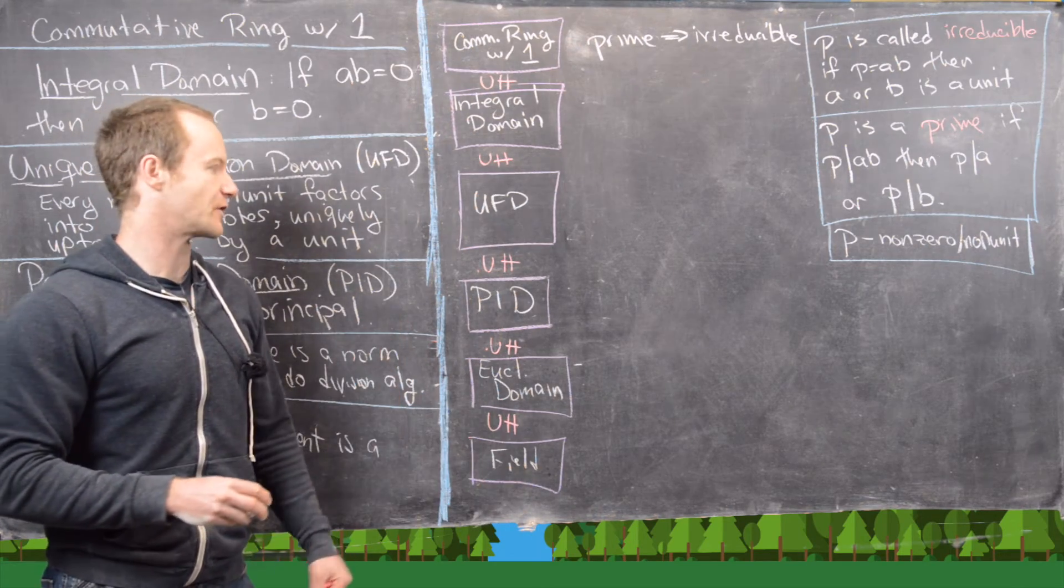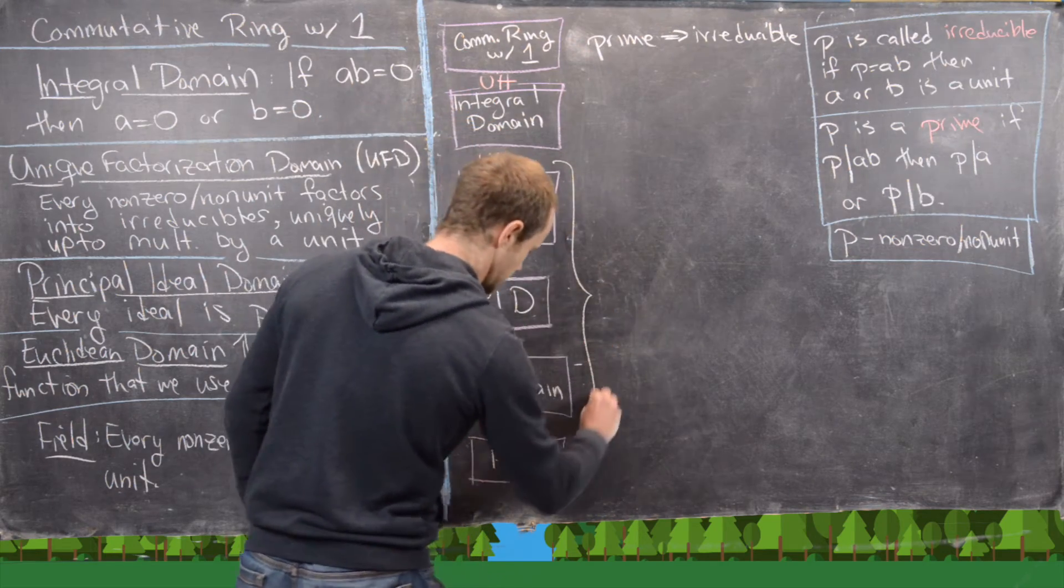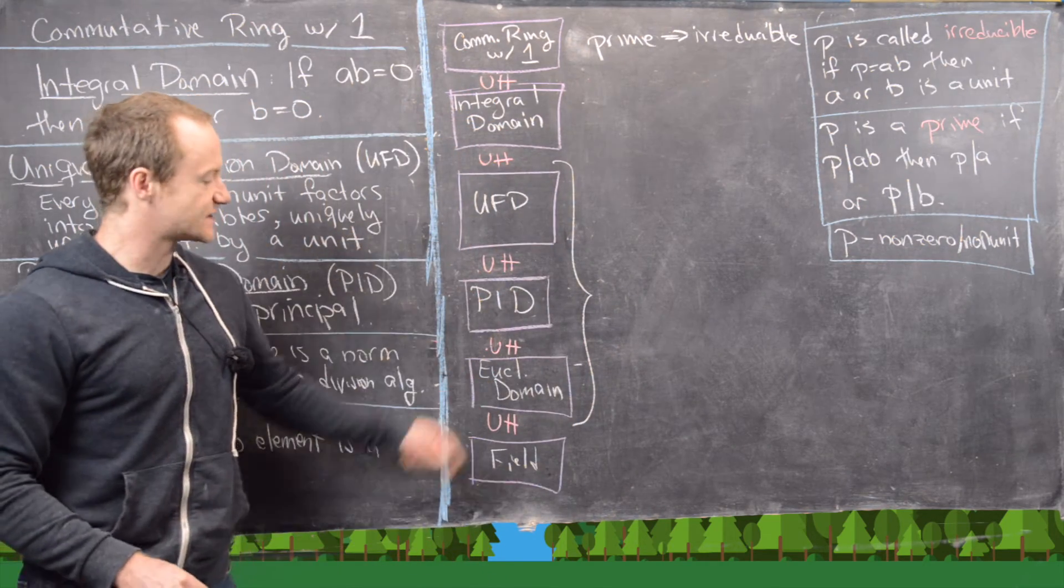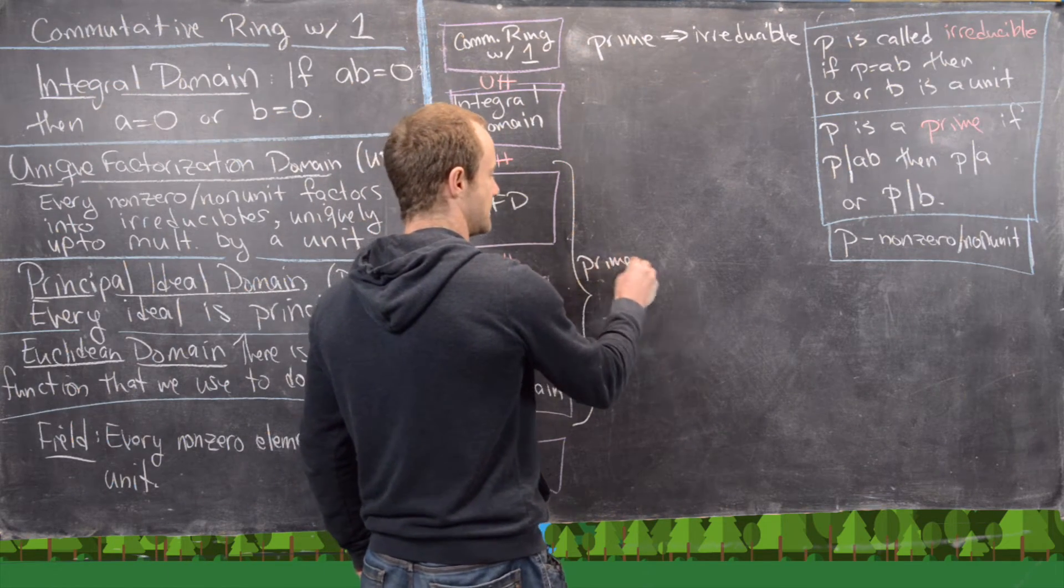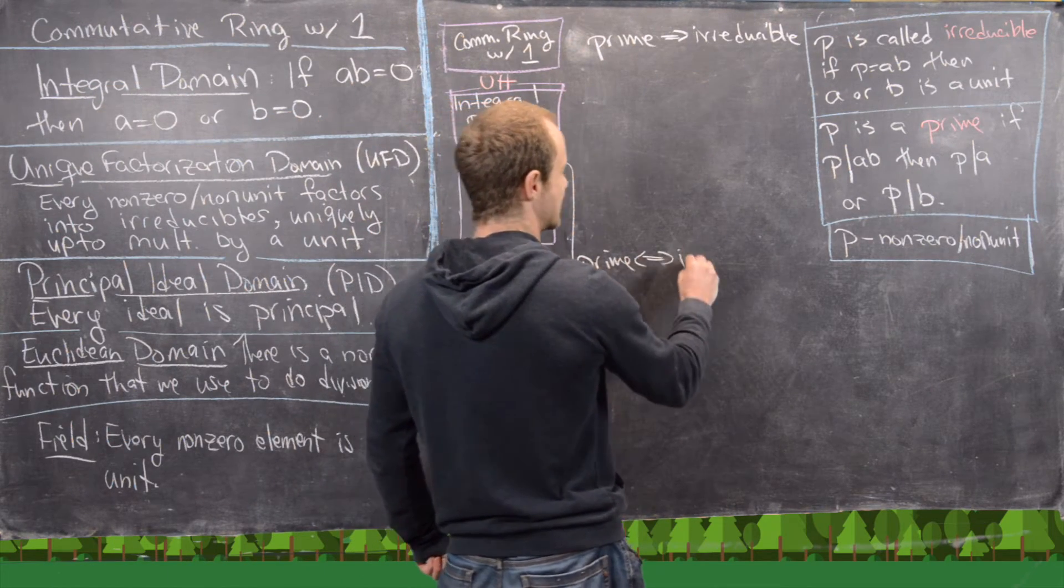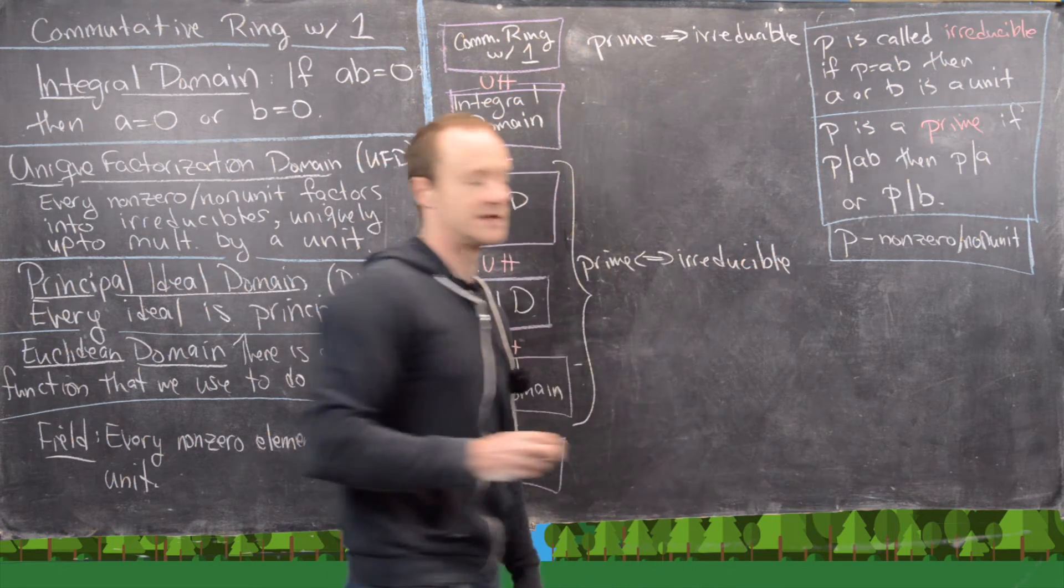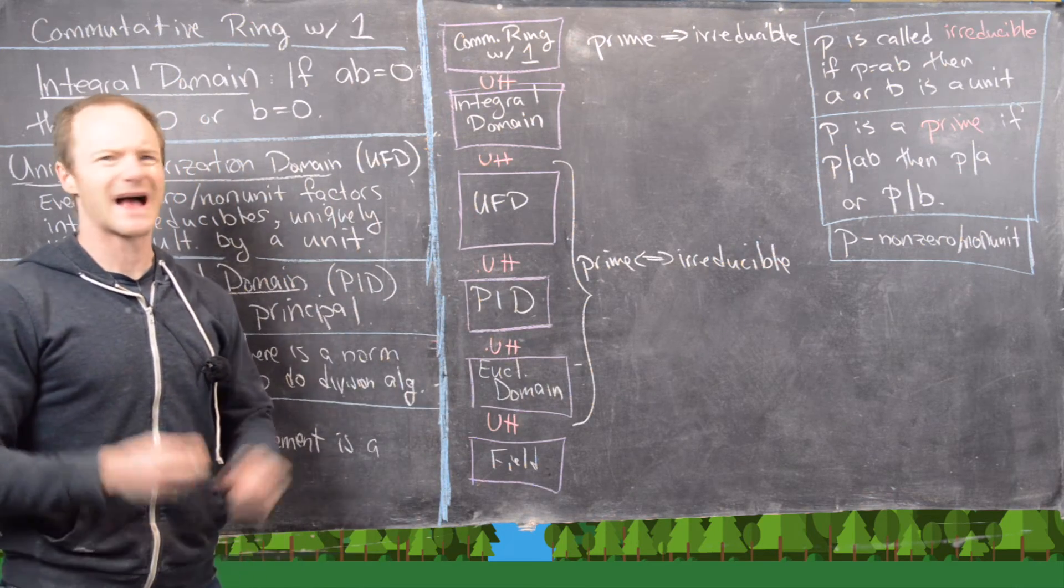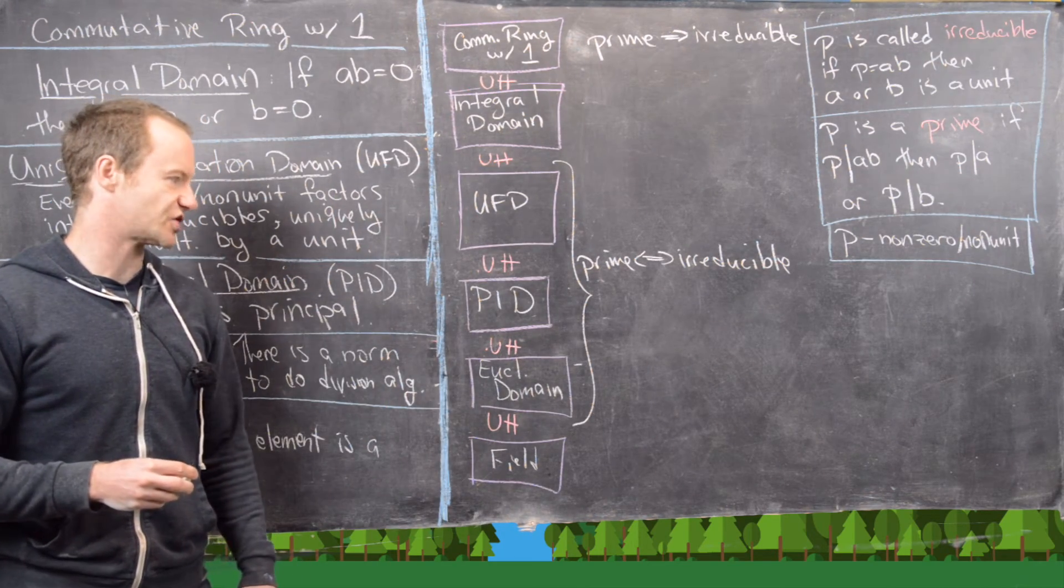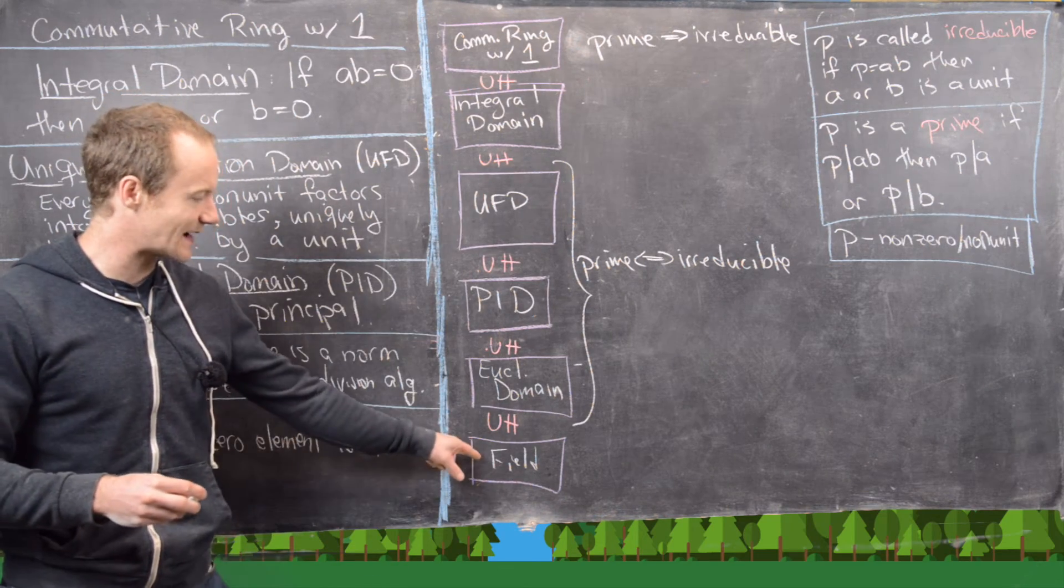So prime always implies irreducible. Irreducible is like a weaker property. But then down here, from UFDs all the way down to Euclidean domains, prime is the same thing as irreducible. And so we proved that for UFDs back several videos ago, so I'll let you guys check that. But if it's true for UFDs, then it's true all the way down.